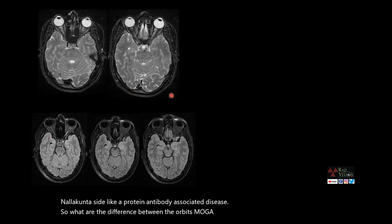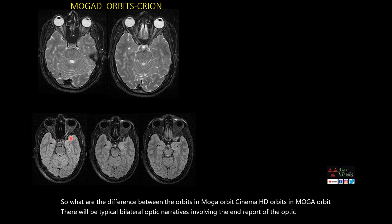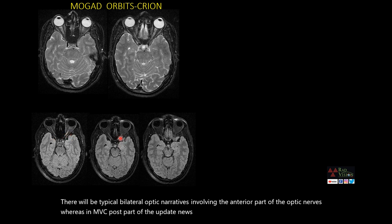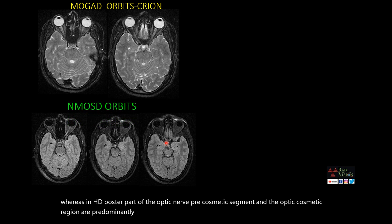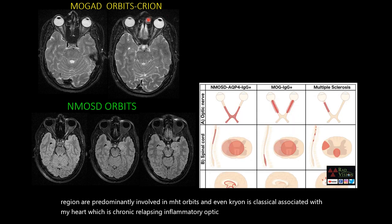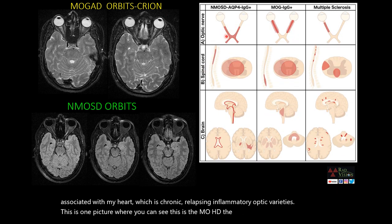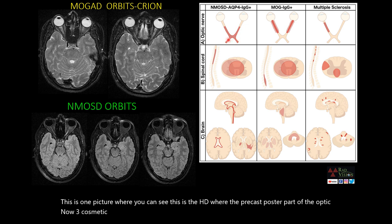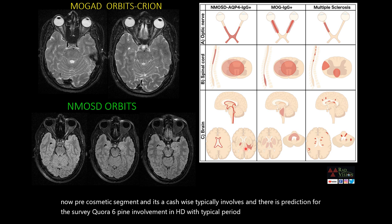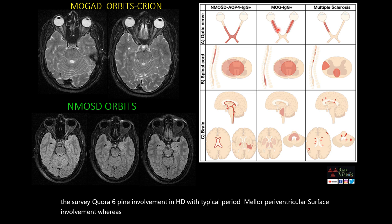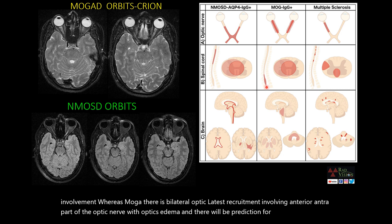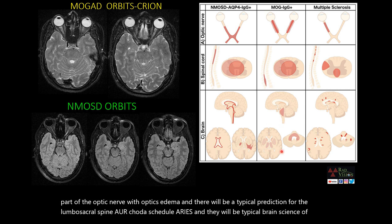What are the differences between the optic nerve involvement in MOGARD and NMOSD? In MOGARD, there is typical bilateral optic neuritis involving the anterior part of the optic nerve, whereas in NMOSD the posterior part of the optic nerve, pre-chiasmatic segment, and optic chiasmatic region are predominantly involved. CRION — chronic relapsing inflammatory optic neuritis — is classically associated with MOGARD. In NMOSD there is predilection for cervicothoracic spine with periependymal surface involvement, whereas MOGARD has predilection for lumbosacral spine and conus medullaris with a brainstem encephalitis or ADEM-like picture.